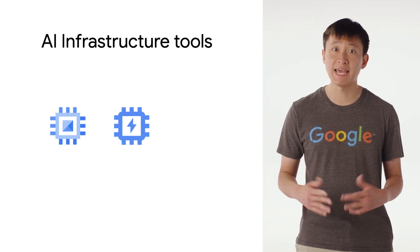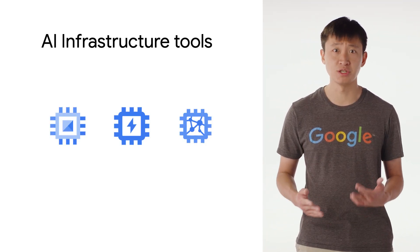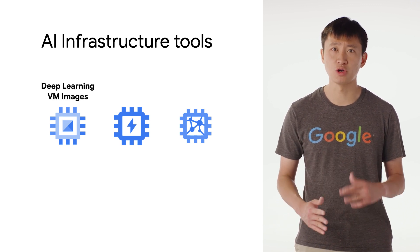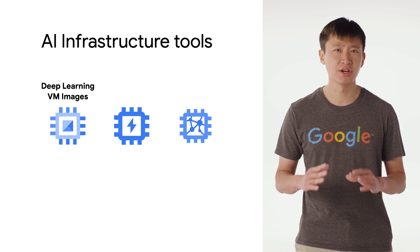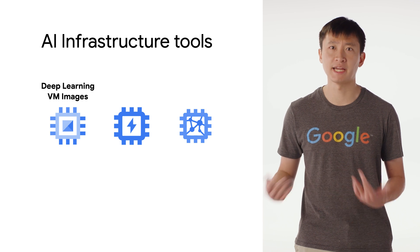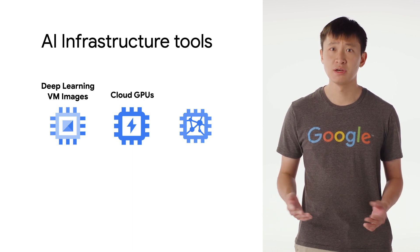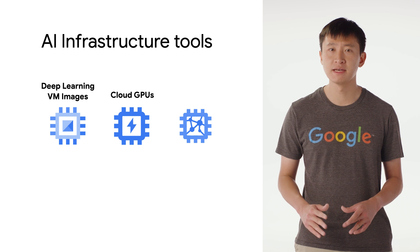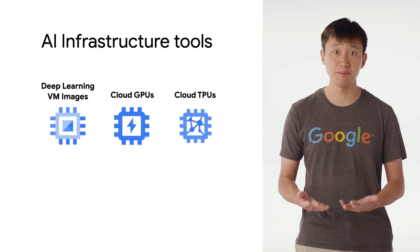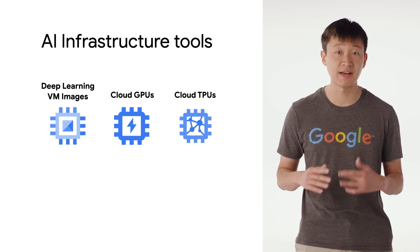While Vertex AI is a great managed solution for building and deploying machine learning models to the cloud, perhaps you want to handle even more of the process yourself. This brings us to AI infrastructure tools, which give you the raw machines and tools to build and host machine learning models. Deep Learning VM images are Google Compute Engine instances that come pre-installed with the latest versions of machine learning frameworks like TensorFlow, PyTorch, and Scikit-learn. There are also Cloud GPUs, which are great for speeding up compute jobs like machine learning, scientific computing, and 3D visualization. And finally, there are Cloud TPUs, which help you train and run machine learning models faster than before.